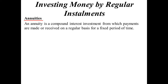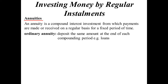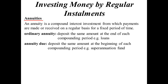It doesn't have to be annual, but it's just called an annuity. There are basically two types of annuities. An ordinary annuity is when you deposit the same amount at the end of the compounding period — that's usually when you're borrowing money, like a loan. Then we have an annuity due, which is when you deposit at the beginning of the compounding period, so they tend to be investments like superannuation.